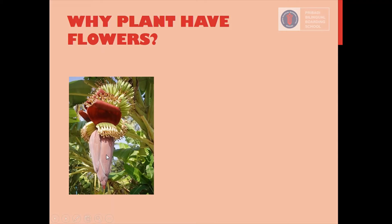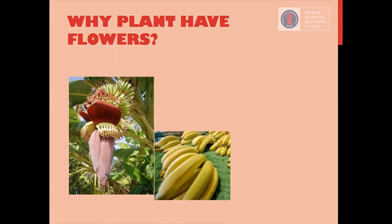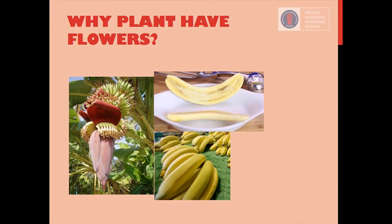Look at this plant — this is a banana flower. When a banana plant produces flowers, the flowers usually last only a few days, then they wither and fall off. However, parts of the flower stay behind on the plant. These parts become the fruit. The seeds form inside the fruit, and then the seeds grow into a new plant.